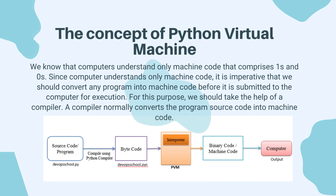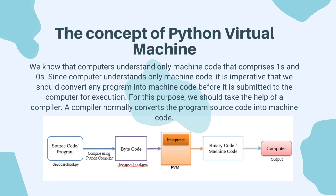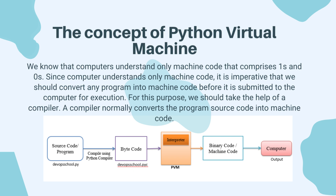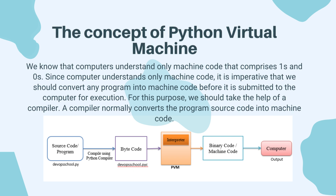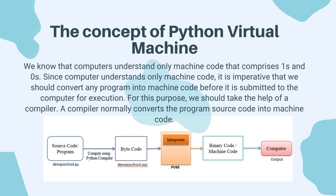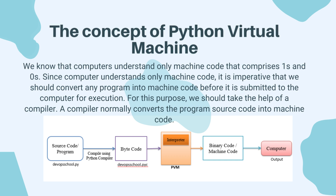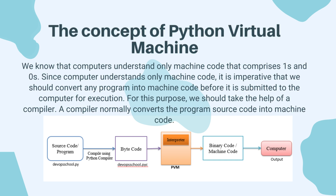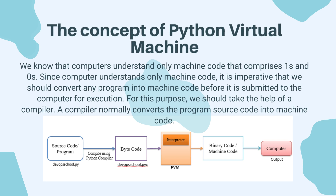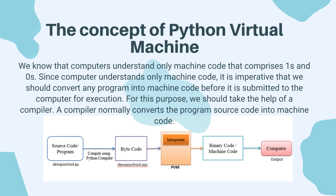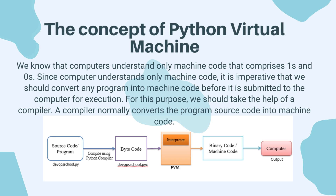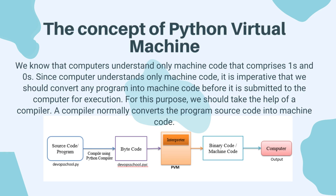We know that computers understand only machine code that comprises ones and zeros. Since computers understand only machine code, it is imperative that we should convert any program into machine code before it is submitted to the computer for execution. For this purpose, we should take the help of a compiler. A compiler normally converts the program source code into machine code.